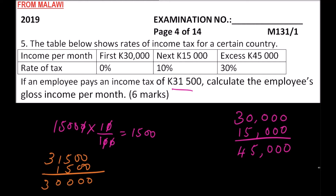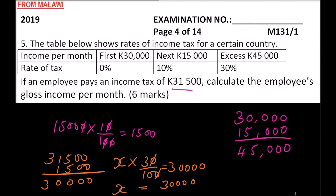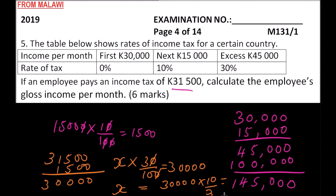This means the amount exceeding K45,000 was taxed at 30%. So we multiply the unknown amount x by 30/100, which equals zero — meaning the remaining tax to explain is zero from this step. Solving: x = 30,000 × 10 ÷ 3, which gives x = K100,000.